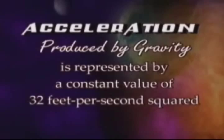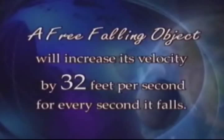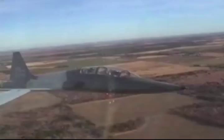The Earth produces a form of acceleration known as gravity, which affects everyone and everything on the ground and in the air. Acceleration produced by gravity is represented by a constant value of 32 feet per second squared. As an example, a free-falling object will increase its velocity by 32 feet per second for every second it falls.